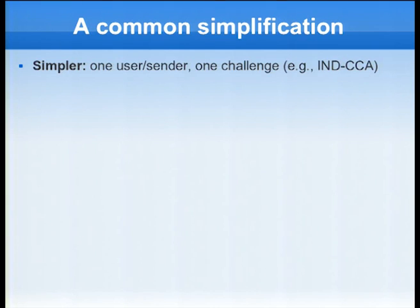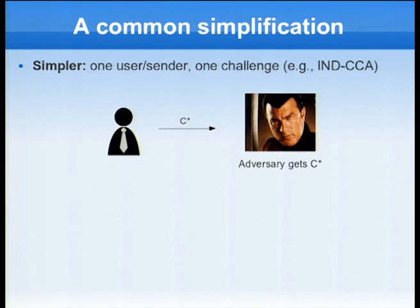But what we usually do when we try to construct public key encryption schemes is that we simplify things and say that we really only have one user or sender, one public key, and we have one challenge ciphertext. For instance, this is the case within CPA security or CCA security. So in this setting, we have a security experiment in which the adversary gets just one ciphertext, and the adversary then has to derive some information about the plaintext in this ciphertext.